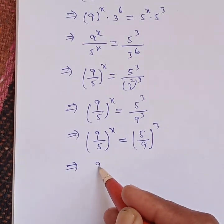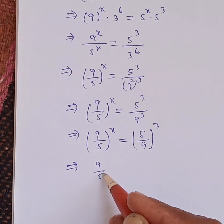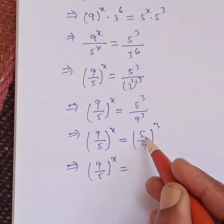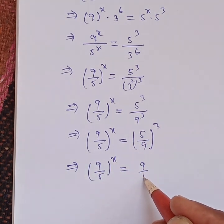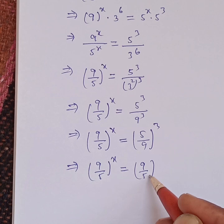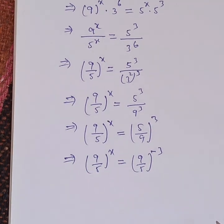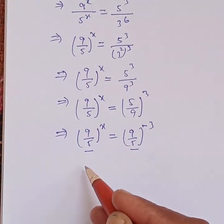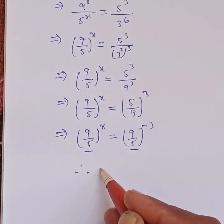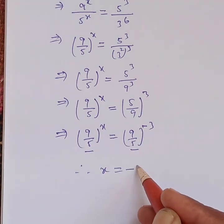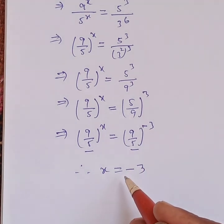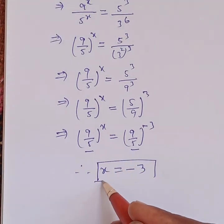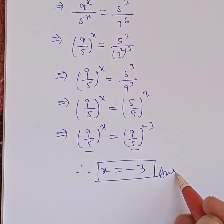This implies 9 by 5 to the power x is equal to 9 by 5 to the power of minus 3. Since both sides have the same base, therefore x is equal to minus 3, and this is the final answer of this equation.